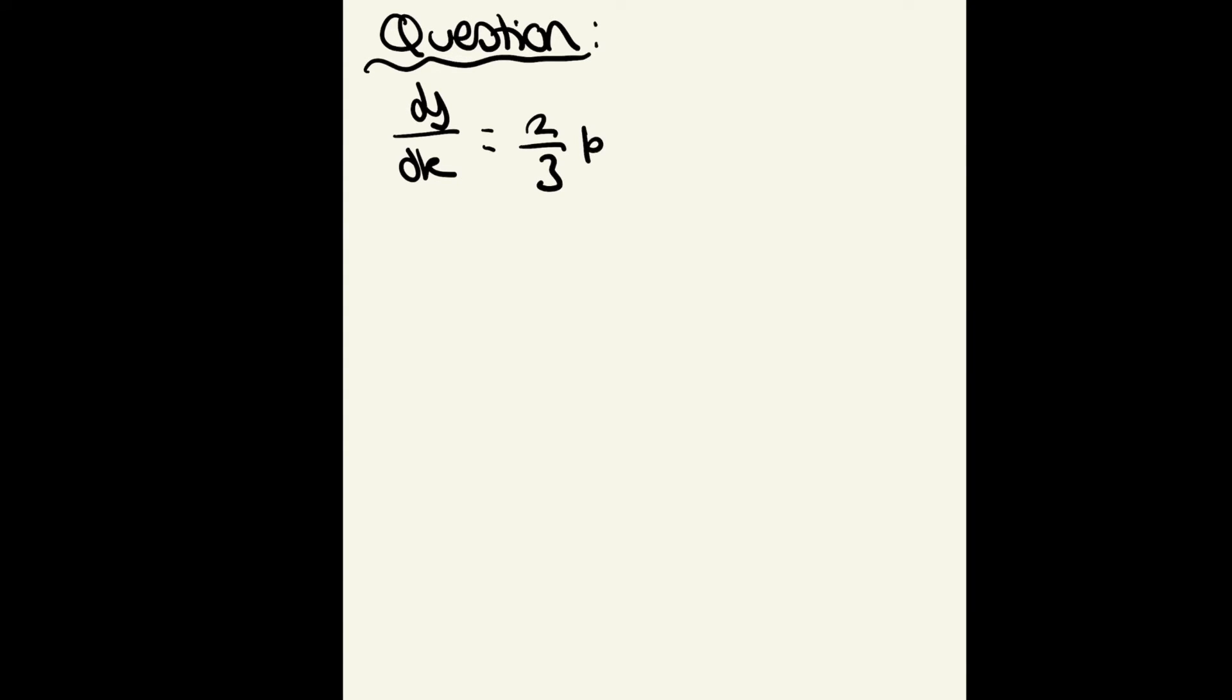First differentiate our production function—bring that power down to get two thirds k to the negative a third. Differentiating our depreciation line, which is only 0.1k, it comes out as 0.1. Set two thirds k to the negative third equal to 0.1.